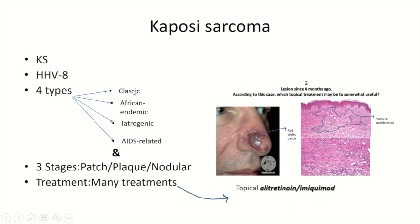The classic type is more common in elderly men, predominantly involving the distal lower extremities. The African endemic subtype involves young African males, especially from equatorial Africa, and is associated with lymph node involvement and a fulminant, fatal course. The iatrogenic subtype, as its name indicates, is seen in patients with cancer, autoimmune disease, or organ transplant recipients.